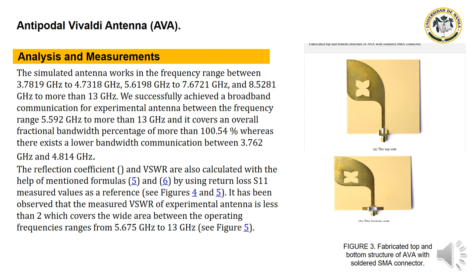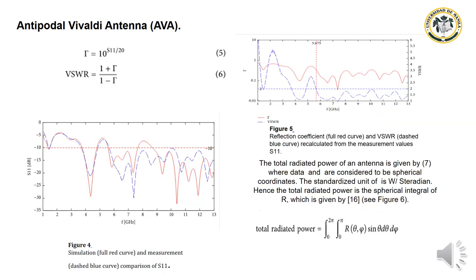It has been observed that the measured VSWR of the experimental antenna is less than 2, covering the wide operating frequency range from 5.675 GHz to 13 GHz, as shown in Figure 5. The formulas used are: R = 10^(S11/20), and VSWR = (1 + R) / (1 − R).